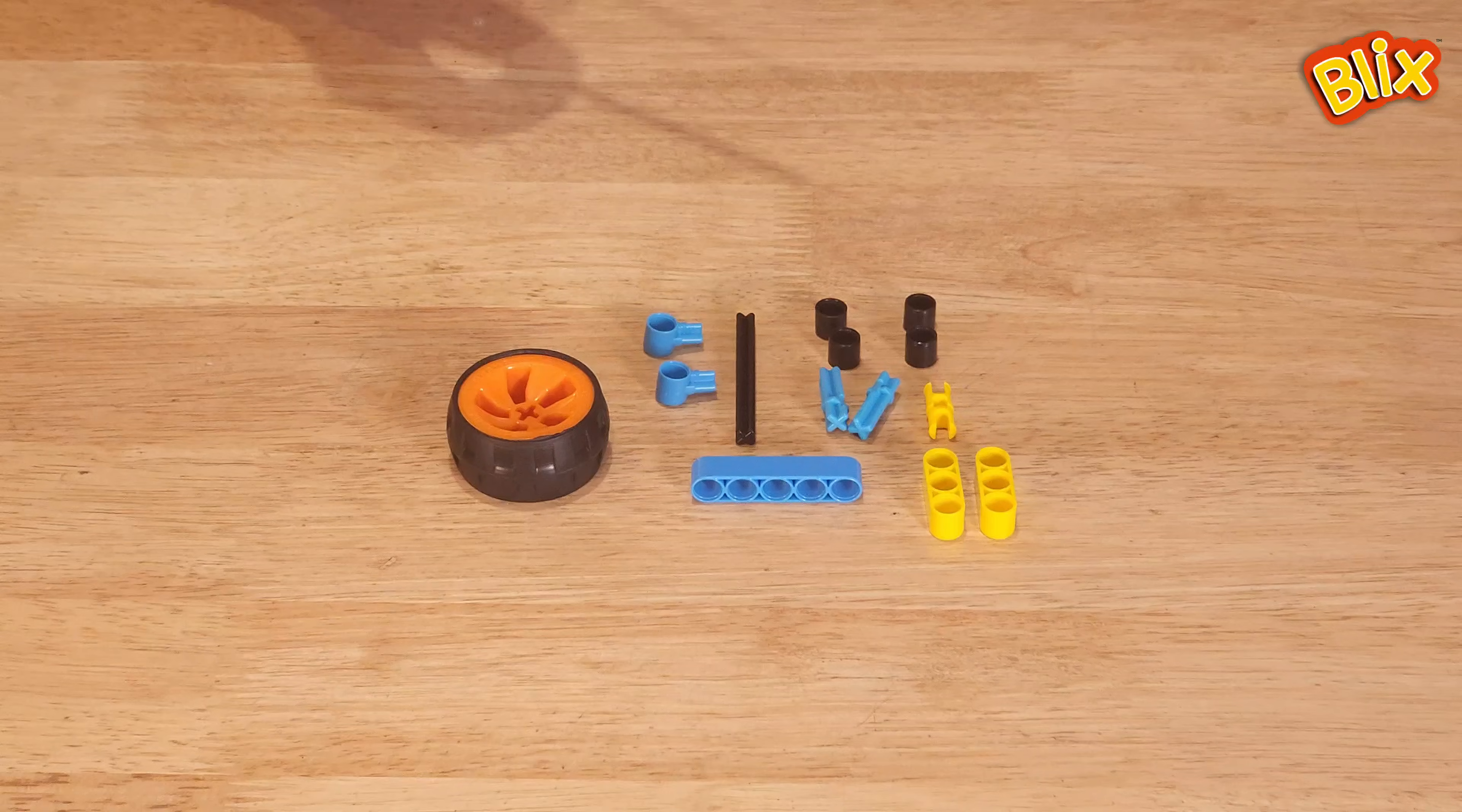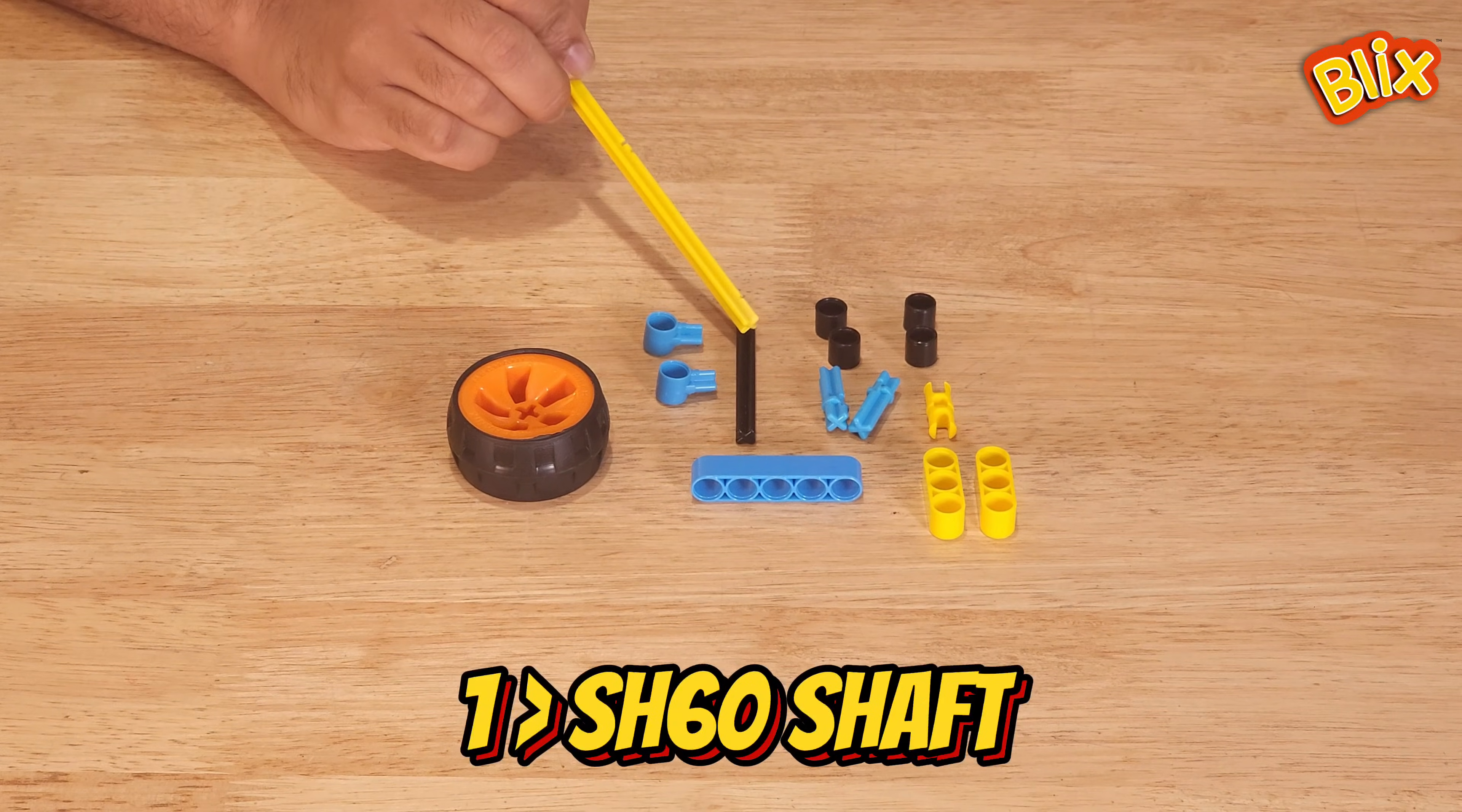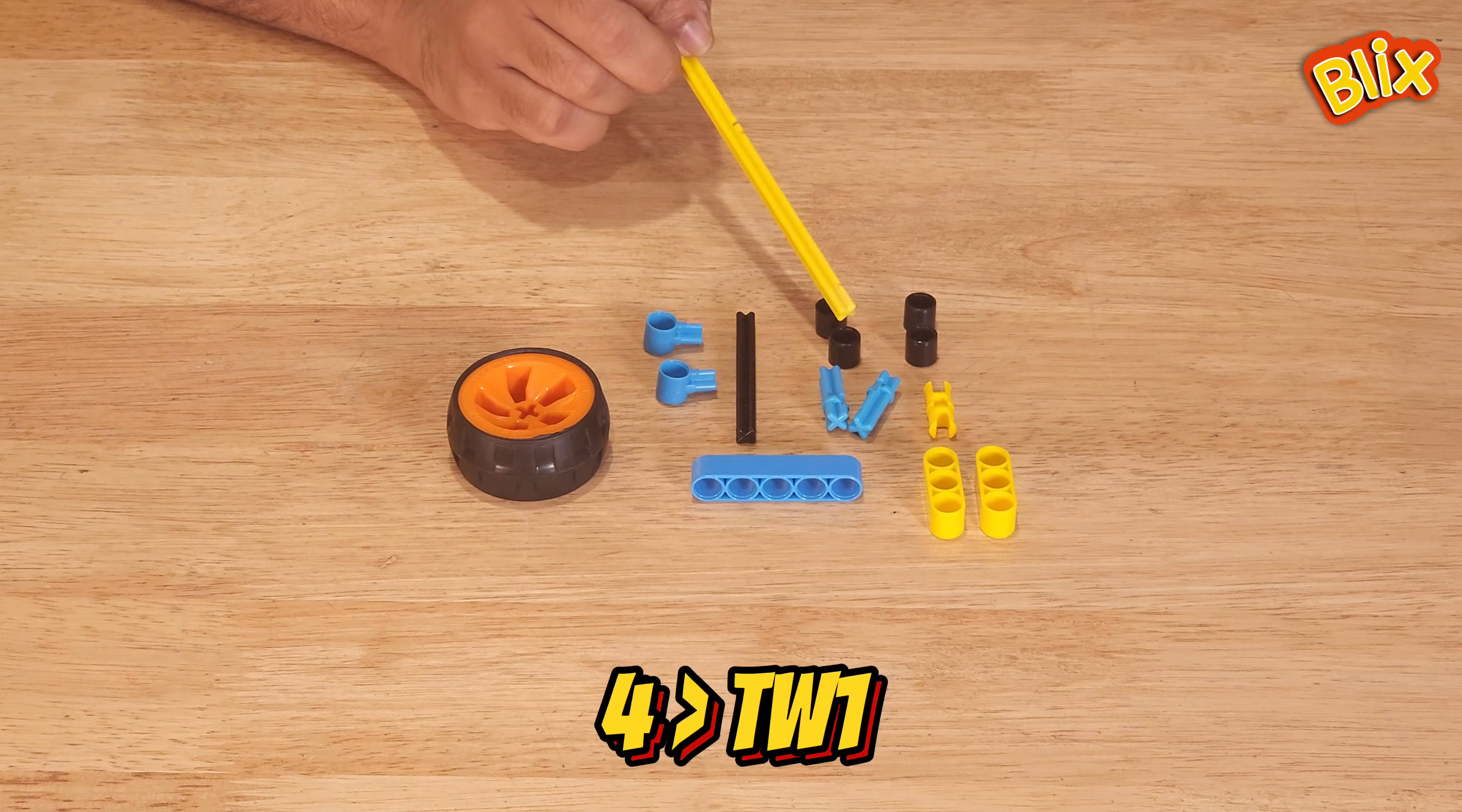To build a caster wheel, you will require two P3s, one P5, one wheel, two CH2s, one SH60 shaft, two CT3s, one CL2 and four TW1s.